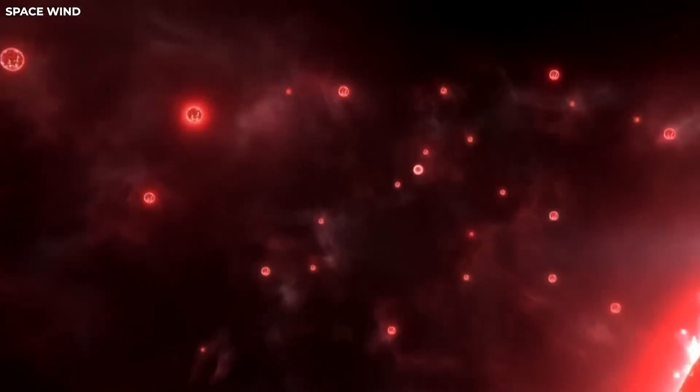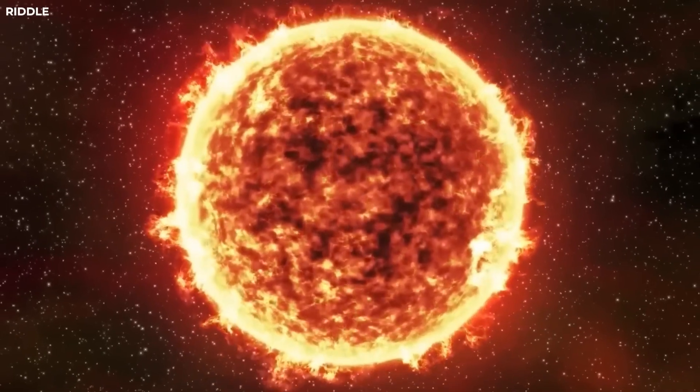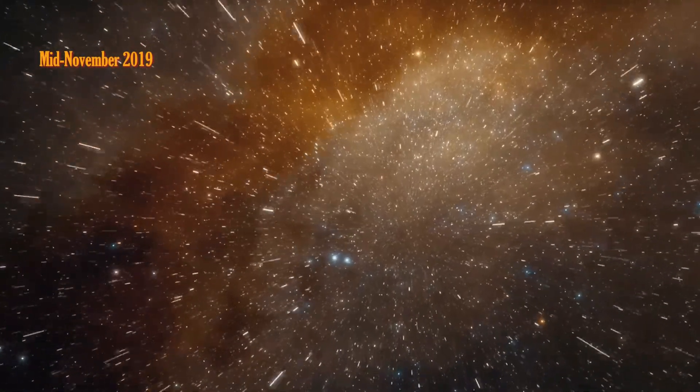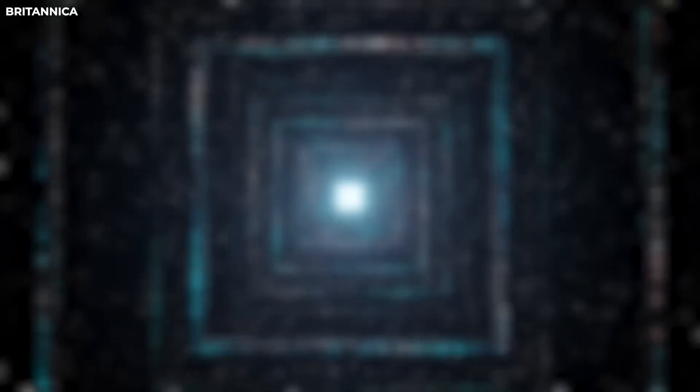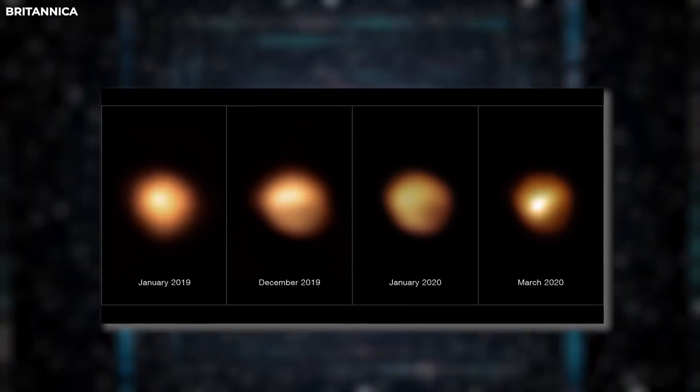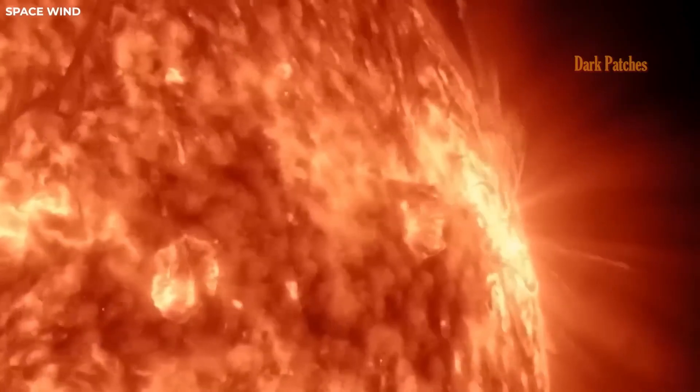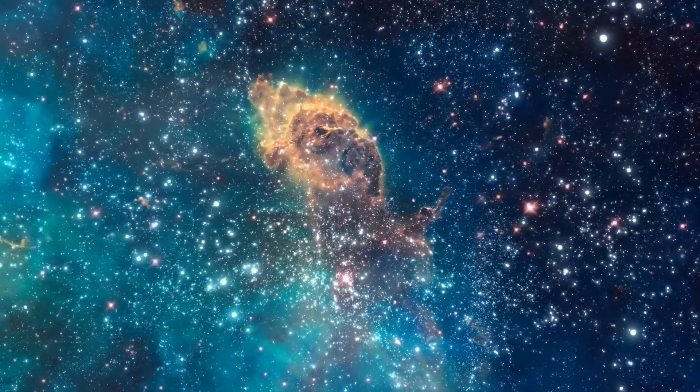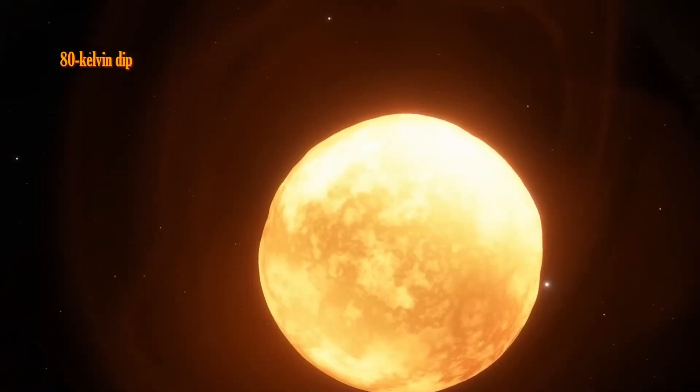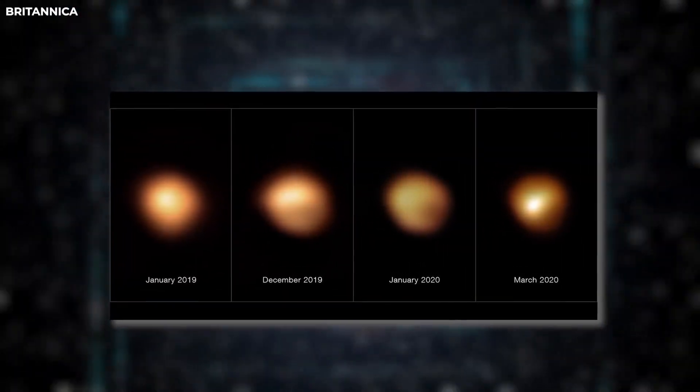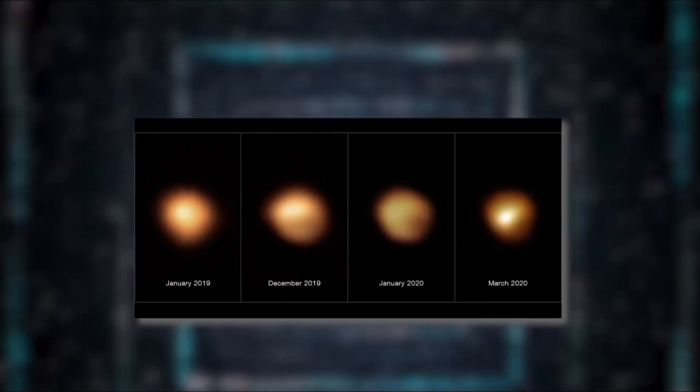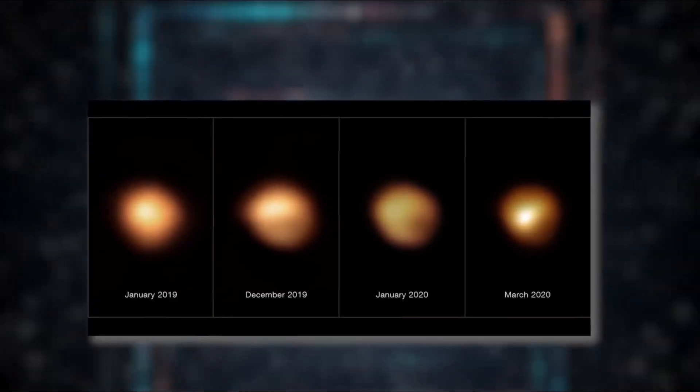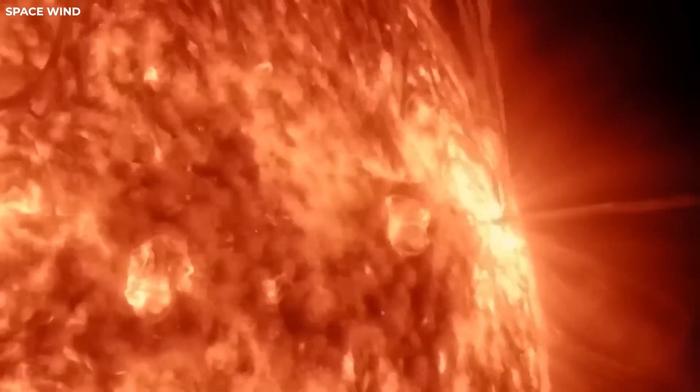But just as we thought we had it all figured out, Betelgeuse threw us a curveball. Come mid-November 2019, the material flow hit the brakes, leaving astronomers puzzled and eager for answers. Fast forward to 2020, and Betelgeuse spilled the cosmic beans. Dark patches appeared, creating a cosmic canvas with a touch of drama. Plus, the star's temperature took a nosedive. We're talking an 80 Kelvin dip. Between January and February 2020, Betelgeuse played hide-and-seek again, reaching an all-time low in brightness. But fear not, cosmic detectives. The star bounced back, and the mystery unfolded.